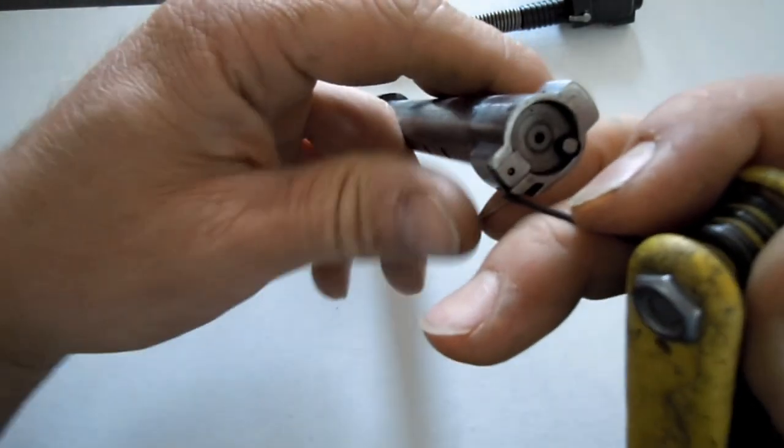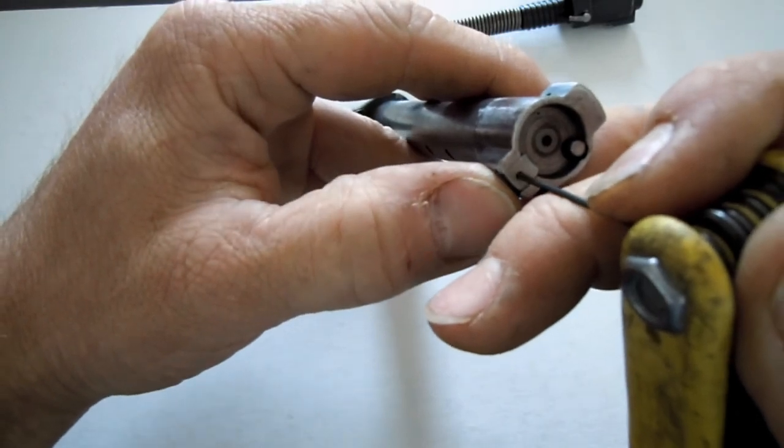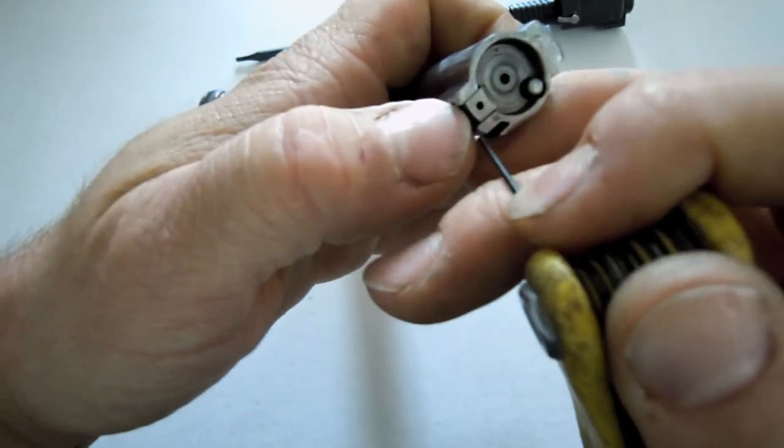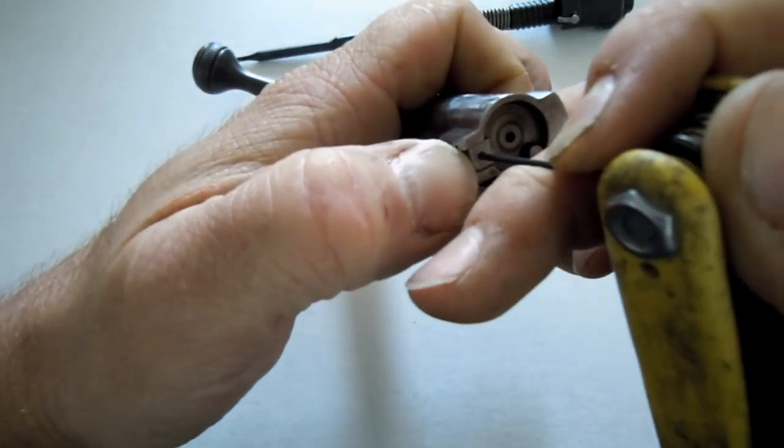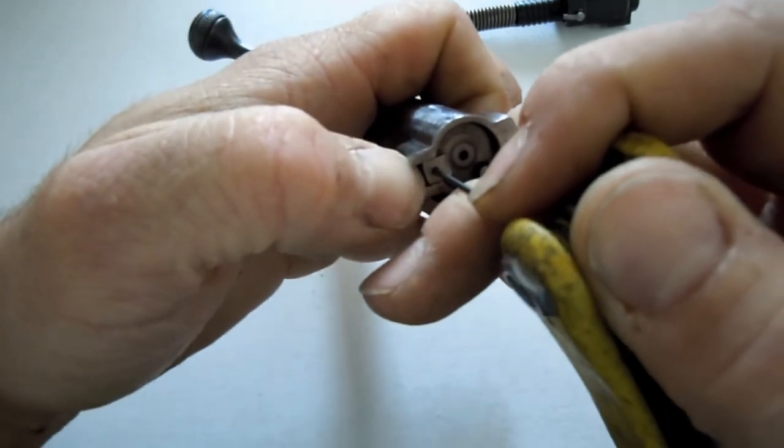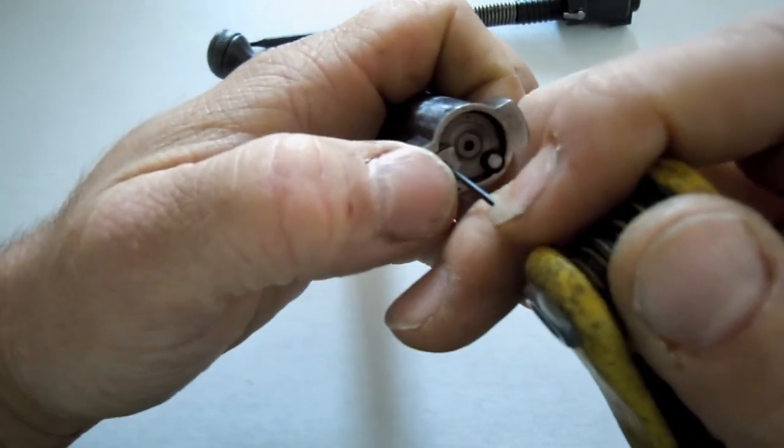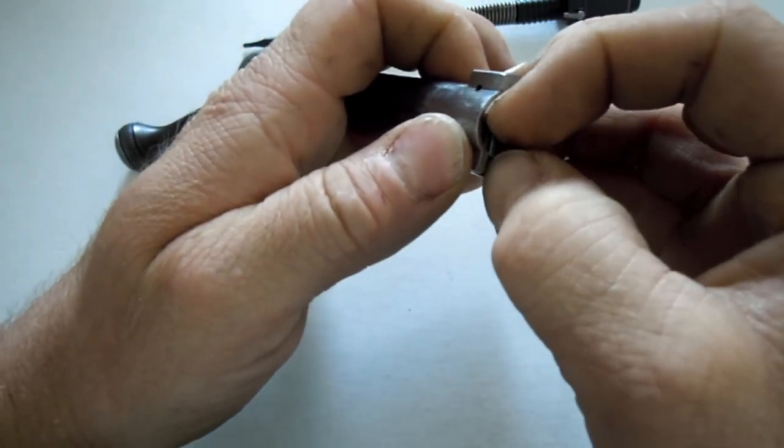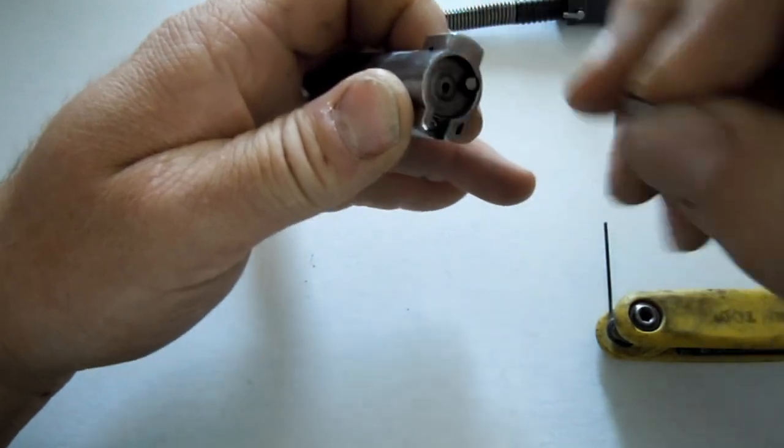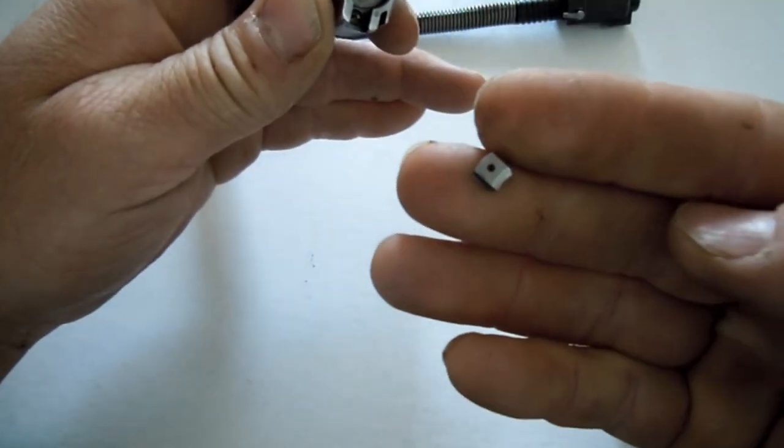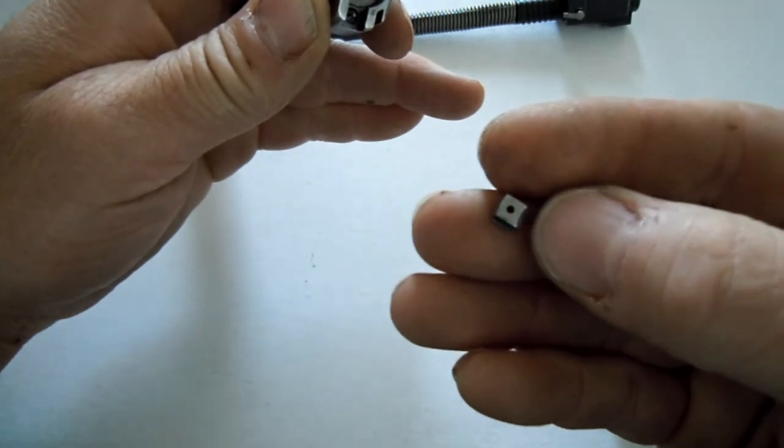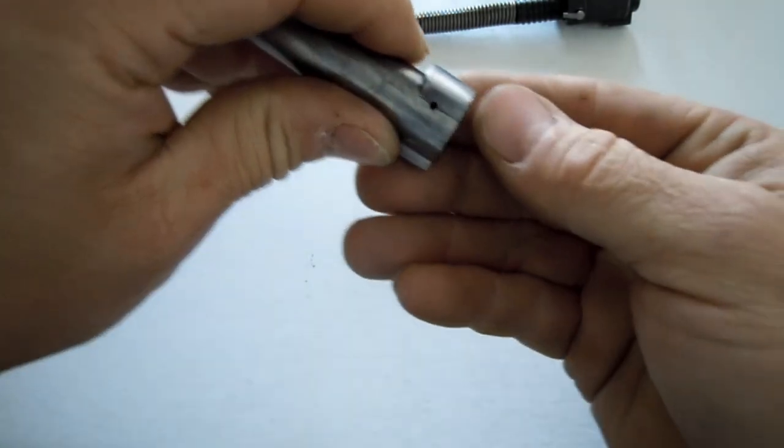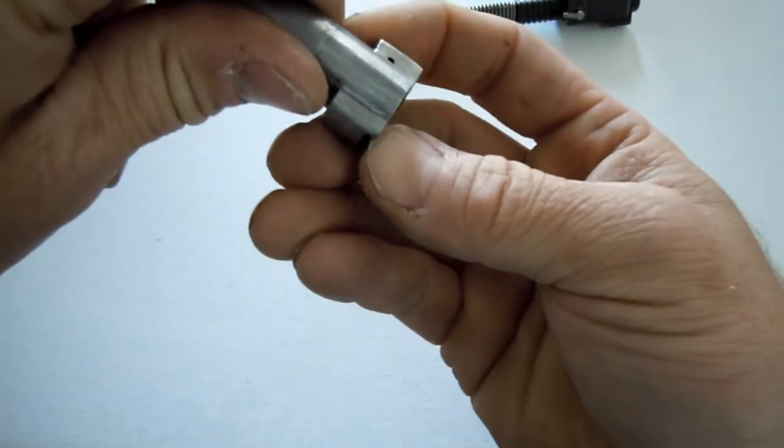I just got a small Allen wrench here. You're going to push down and push forward so it doesn't spring. Try not to get it to shoot all over. Ejector's out. Remember the beveled side goes up. All that's in here, I can get her out of there.